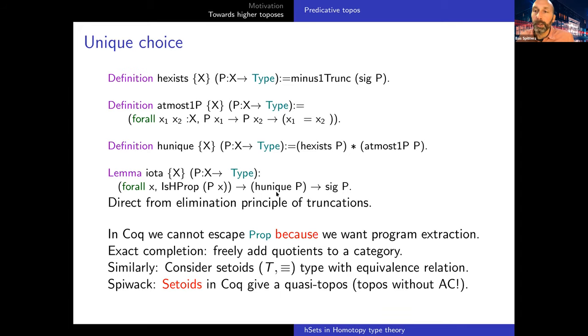There's a question. Yeah. That shouldn't be too hard to find the paper. The paper is called propositions as bracket types. It should be on Andrej's website.